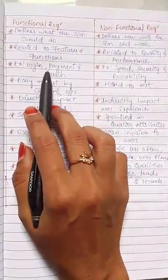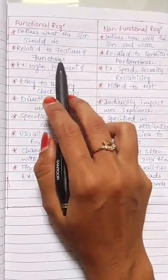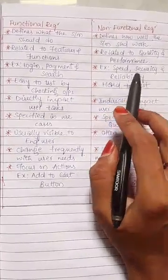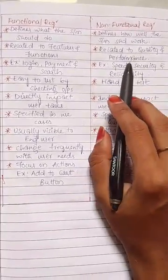For example, login, payment, and search. These are related to features and functions. And for example here, speed, security, and reliability. These are related to quality and performance.